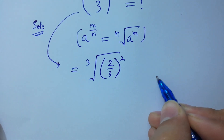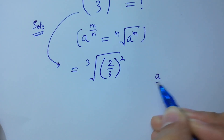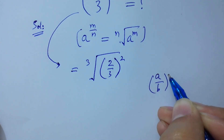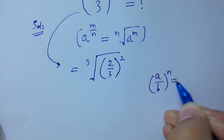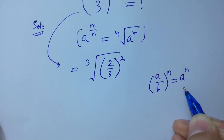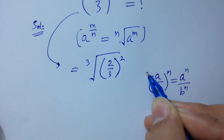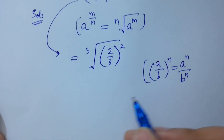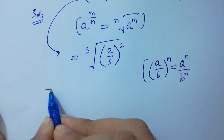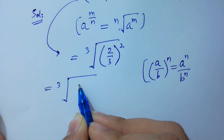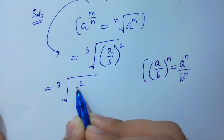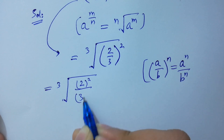Since a over b to the power n is equal to a to the power n over b to the power n, so it will be cube root of 2 squared over 3 squared.